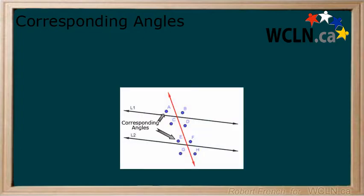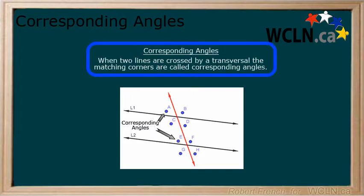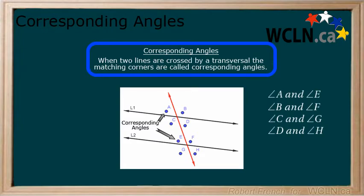When two angles are in matching corners like they are here, they are called corresponding angles. Here are all the corresponding angles we can currently see.